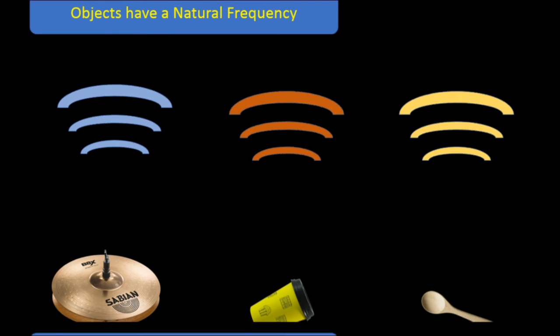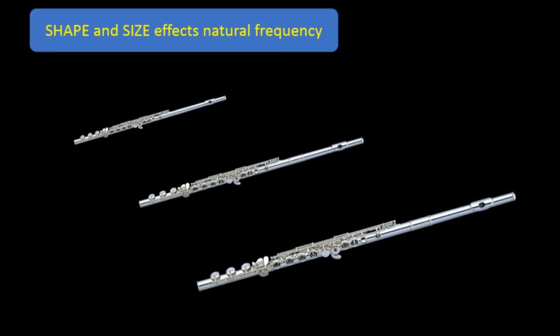The things that determine the natural frequency of an object is the object's size and shape. For instance, these three flutes, although built the same, have different lengths and different sizes, so they will sound differently. They will have different natural frequencies. The bottom one will have a much lower frequency, and the shorter one, the top one, will have a much higher frequency.